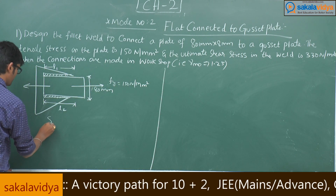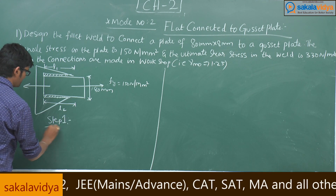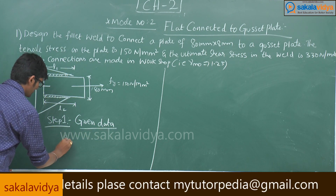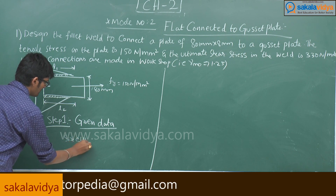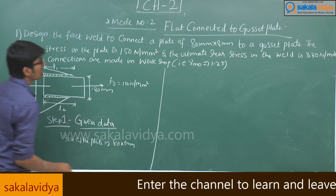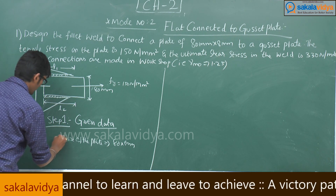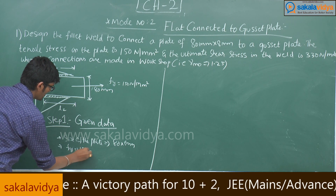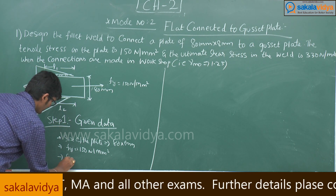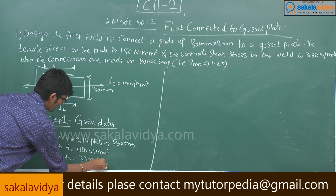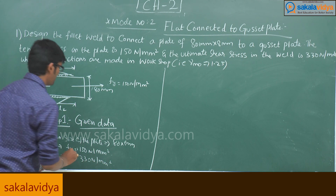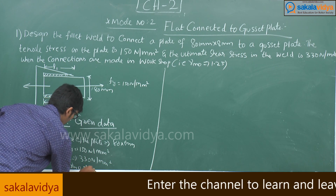Step 1 — Given data. Size of the plate: 80 × 8 mm. Tensile stress Fi = 150 Newton per mm². Ultimate shear stress Fu = 330 Newton per mm². Since connections are made in the workshop, the partial safety factor gamma = 1.25.